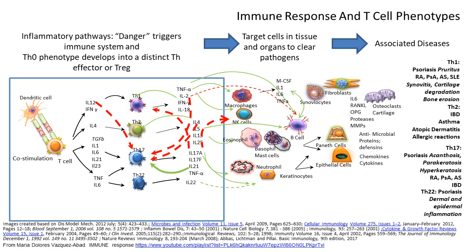One subunit of interleukin-12 is shared with interleukin-23 — a fascinating biological observation that even though one subunit is shared by two different cytokines, their profiles and actions are very different: IL-12 commits the cell to a Th1 phenotype, while IL-23 commits it to a Th17 phenotype. This inter-talk tells us that once a cell identifies a type of danger signal, it commits to having the best possible response, inhibiting the other pathways accordingly.